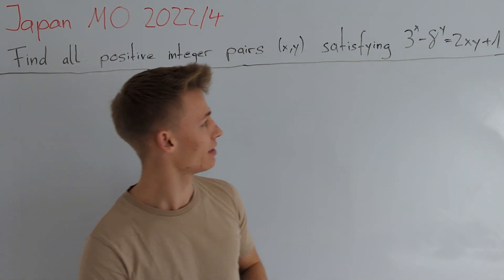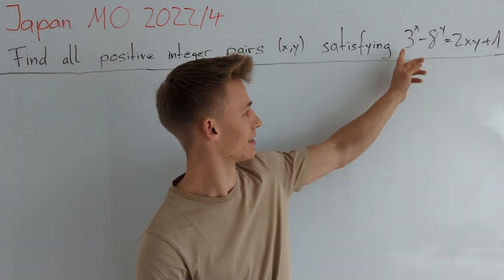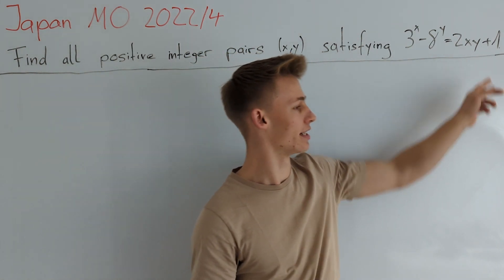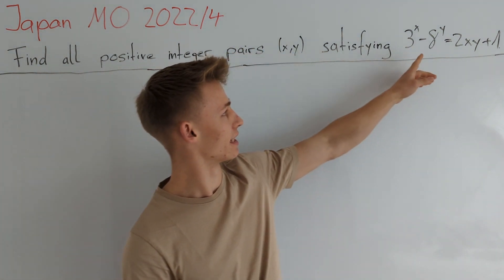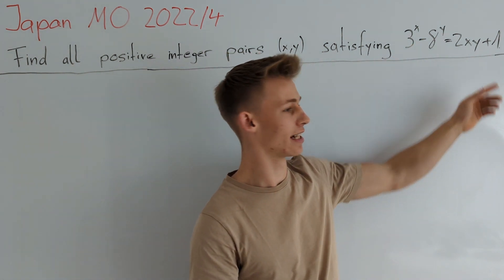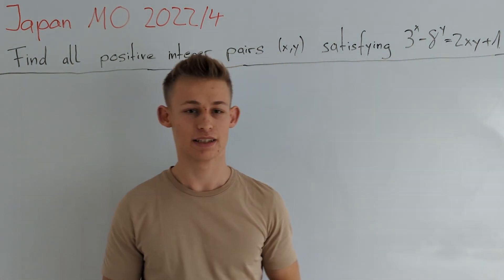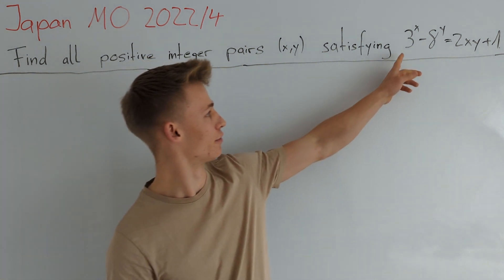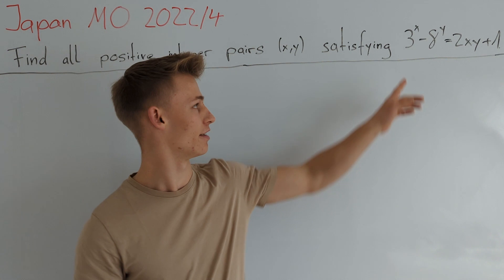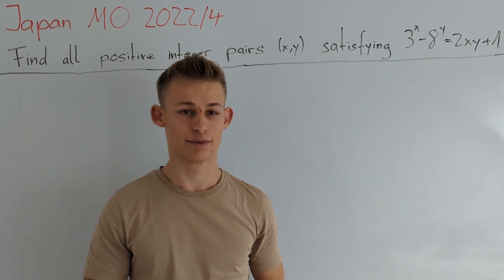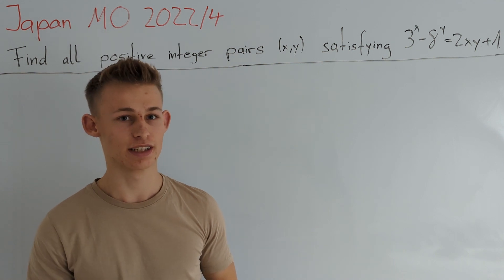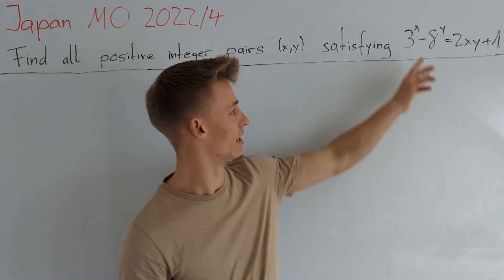When we see this equation, we might guess that for x and y large enough, the left hand side should be larger than the right hand side, because on the left hand side we have powers and on the right hand side we only have linear terms. But it could be possible that a power of 3 is almost equal to a power of 8, so we cannot directly bound by size. Maybe one approach is to try to factor the left hand side.